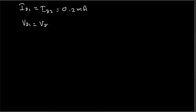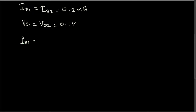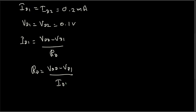The problem states the drain voltage of Q1 and Q2 should be 0.1 V, so VD1 equals VD2 equals 0.1 V. We can now find Rd directly: ID1 equals (VDD minus VD1) divided by Rd, so Rd equals (VDD minus VD1) divided by ID1 equals (0.9 minus 0.1) divided by 0.2 mA equals 0.8/0.2 mA equals 4 kΩ.